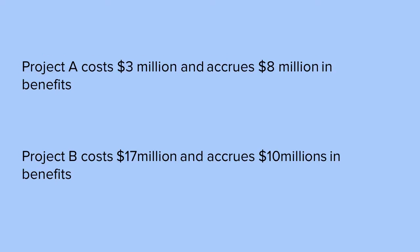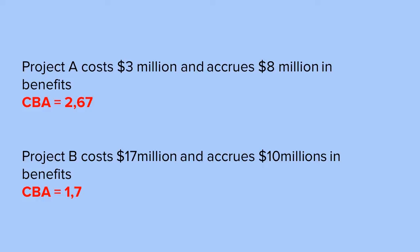Consider this: Project A costs $3 million and accrues $8 million in benefits. Project B costs $17 million and accrues $10 million in benefits. The CBA for Project A is 2.67 and the CBA for Project B is 1.7 (calculated as $10M ÷ $17M ≈ 0.59, but presented as stated). In this case, we should choose Project A because the larger the CBA, the better.